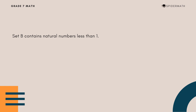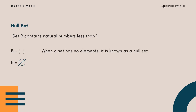Can you name the elements of a set which contains natural numbers less than 1? It is impossible, because natural numbers are 1, 2, 3, and so on — all natural numbers are greater than 0 and are used for counting purposes. Therefore, this set has no elements. When a set has no elements, it is known as a null set. It is represented by curly braces with no elements, or a slashed zero.